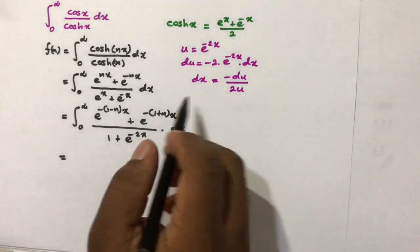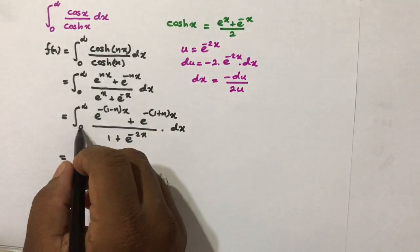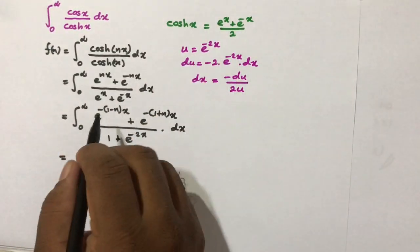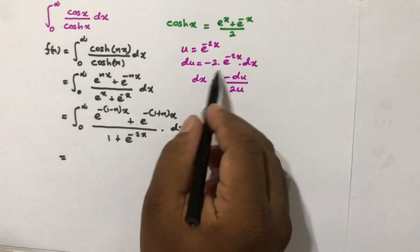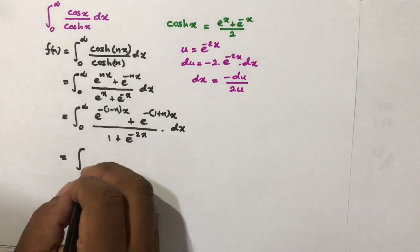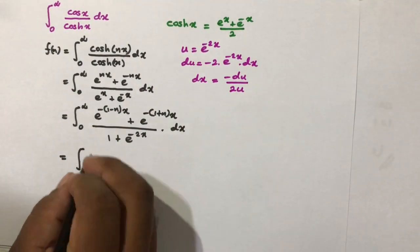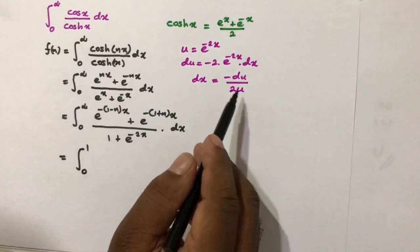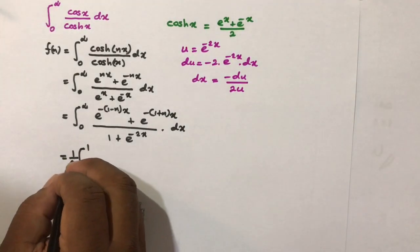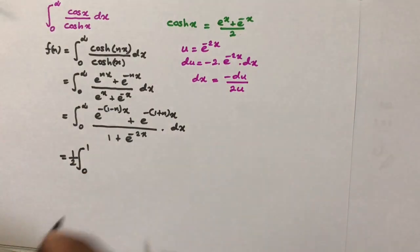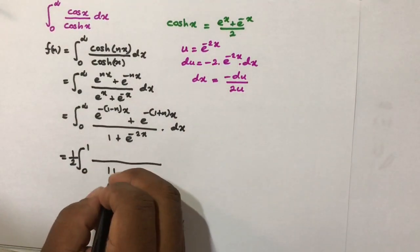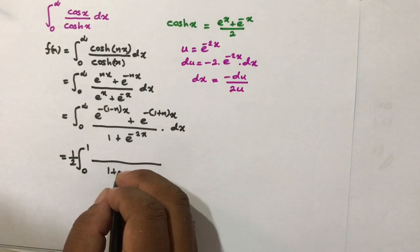The limits change: as x goes from 0 to infinity, u goes from 1 to 0. The minus sign allows us to swap the limits to 0 to 1. We factor out 1/2 in front of the integral, and 1 + e^{-2x} becomes 1 + u.